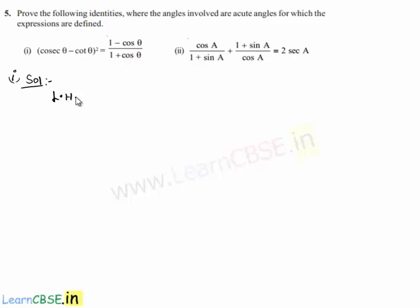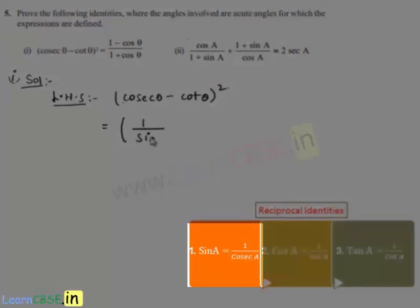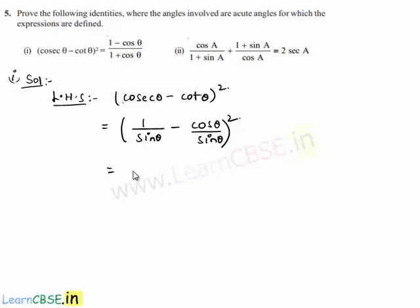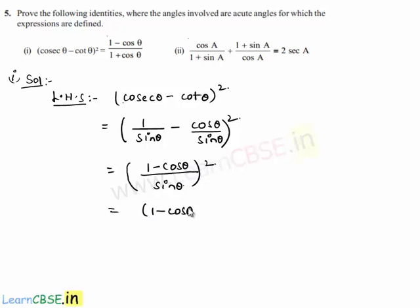Let us initially consider the left hand side, that is cosecant theta minus cot theta, whole square. So cosecant theta can be written as 1 by sin theta, minus cot theta can be written as cos theta by sin theta, and the whole square remains the same. Taking sin theta as the common denominator, the numerator becomes 1 minus cos theta, whole square, which equals 1 minus cos theta whole square divided by sin square theta.